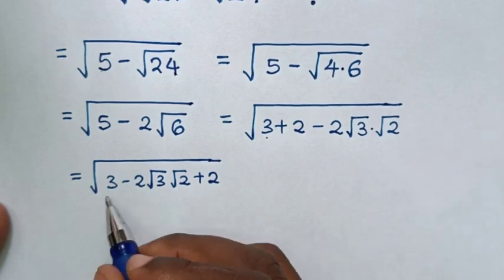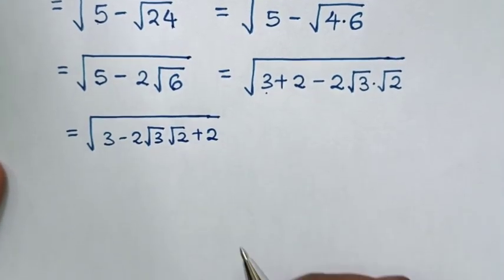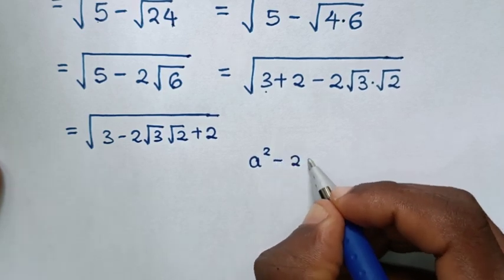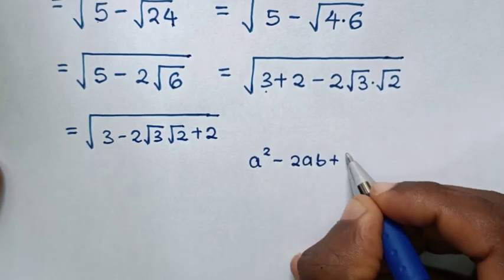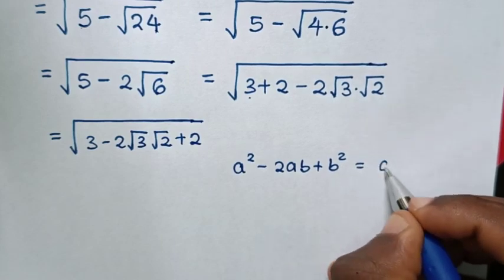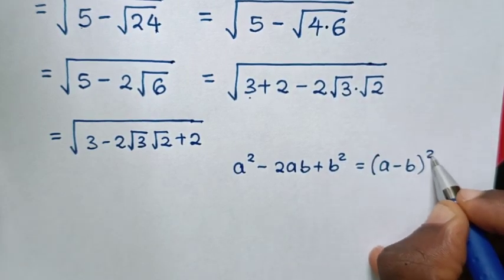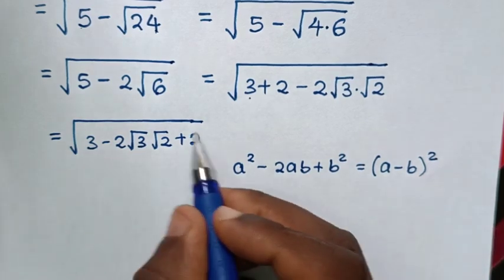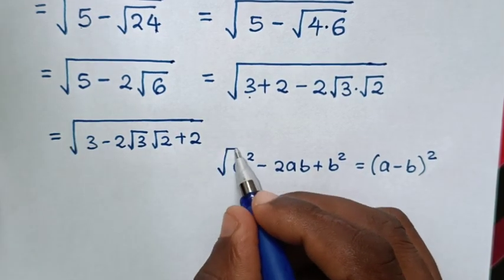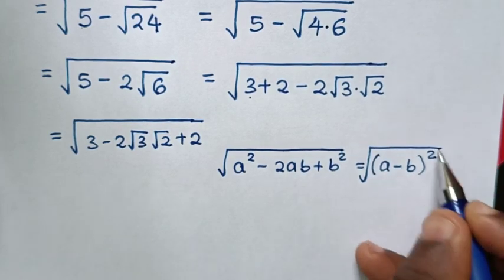Now, this expression under the square root is in the form of a squared minus 2ab plus b squared, which is equal to a minus b, bracket squared. But this expression was under the square root, so here we will apply the square root.